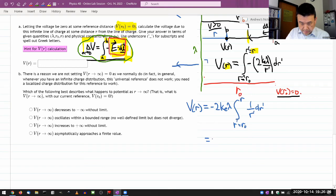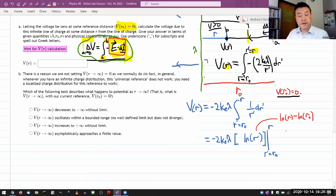So let me write that up, minus 2kλ, the antiderivative, natural log of R prime. And I need to evaluate it at the two limits, R prime equals R naught and R. And so let me just do that calculation off to the side here. It's going to be natural log of R minus natural log of R naught. And doing that logarithm algebra, you have seen a few times, natural log of R over R naught.